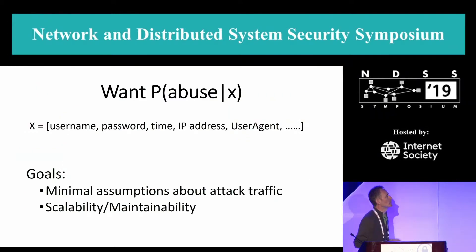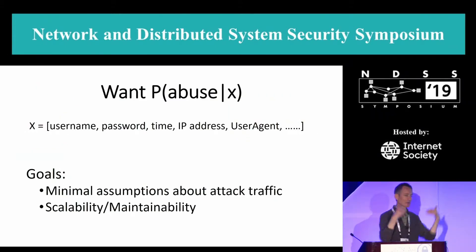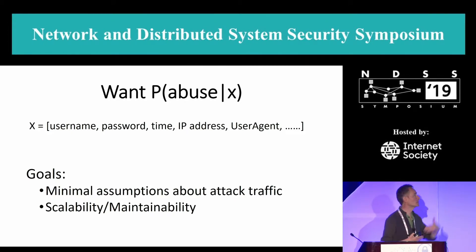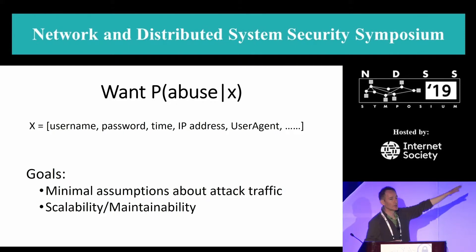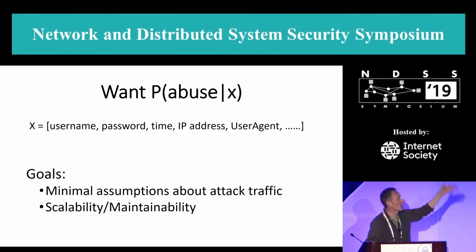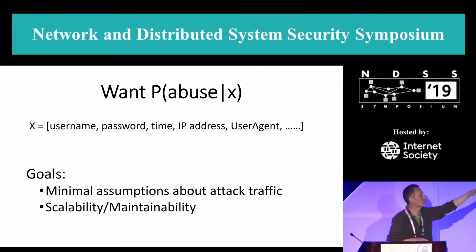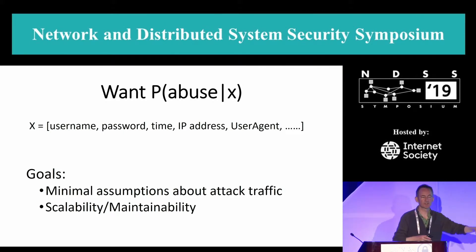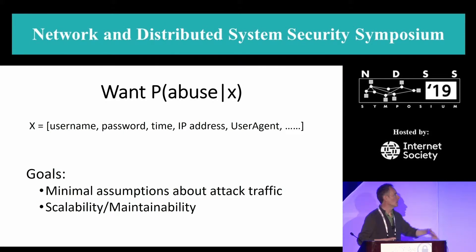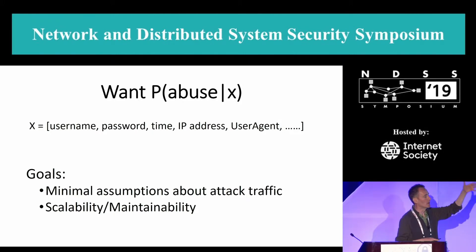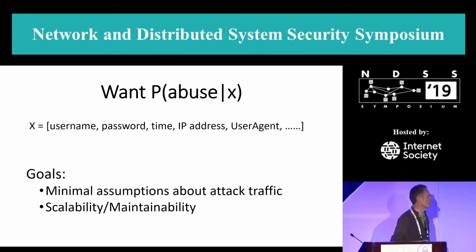What I want is basically to calculate: given a connection, what is the probability that this is an attack rather than a legitimate account, given my observations X? And X is going to be stuff like the username and password, time, IP address, user agent, browser information, maybe whether I think it's behind a proxy, whether JavaScript is enabled on the browser.